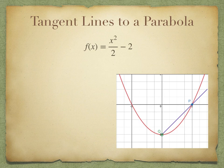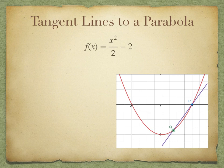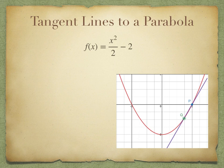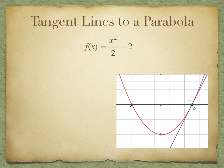What we can do is pick a point q on the curve and draw a secant line pq. Then we move q closer to p — using the secant line pq but moving q closer and closer to p until it is very close to p. At this point, the secant line pq can be seen as the tangent line to this parabola at point p.